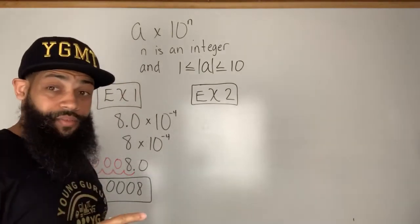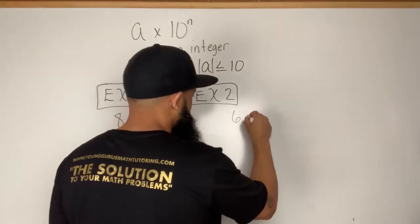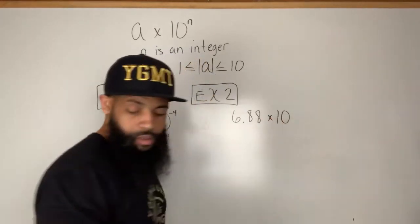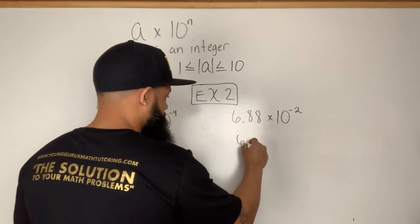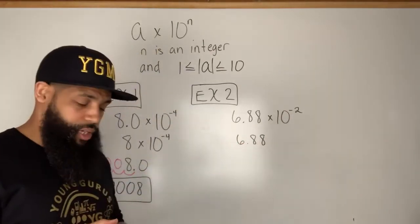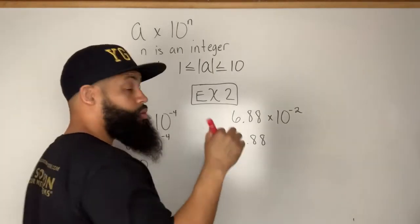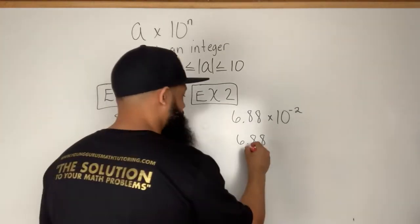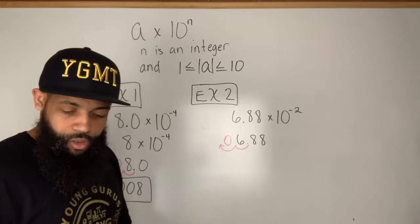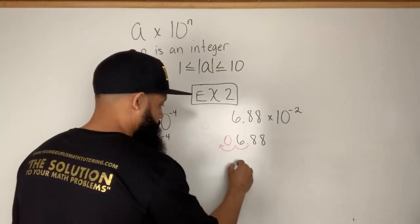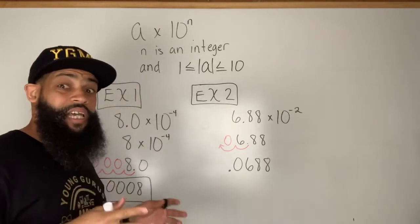Remember, we're converting from scientific notation to standard form. Let's say I have 6.88 times 10 to the negative second power. We start with 6.88. Because I have a negative exponent — and remember, negatives are on the left side of zero — I'm going to move this decimal to the left two times: one, two. I fill that gap with a zero, and I end up with 0.0688.